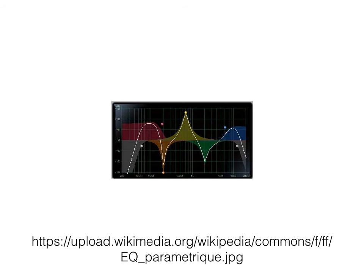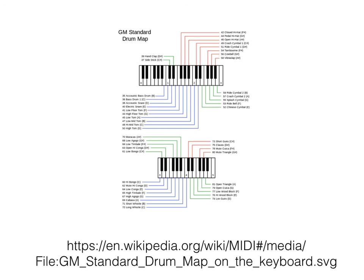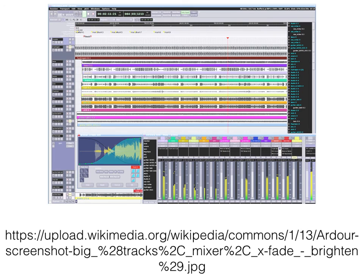Sound modification is a technique of taking an existing sound and changing the sound. Sound reproduction is a technique of taking an existing sound and then outputting the sound in a new format. Protocols are standard means of communicating data between components. A system is a combination of components that produces a larger result.